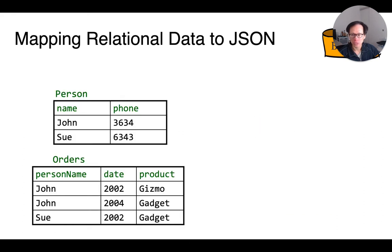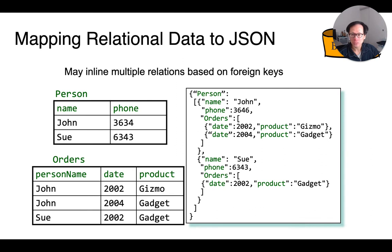But what if we have two relations? We can obviously map each relation into its own document using the algorithm from the previous slide. Or we can inline a relation into another thanks to the semi-structured nature of JSON. For instance, here we inlined each person's order as part of each person's object in the JSON document itself.